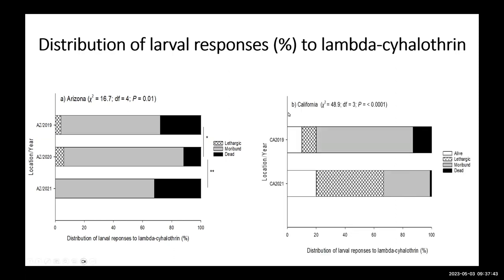Here is the situation in California compared to Arizona. You can see there is more of the white checkered pattern, meaning more resistant populations in California. In Arizona we are still mostly on the susceptible side.